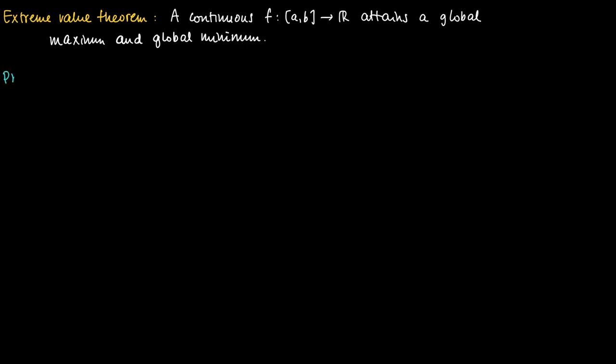In this clip I will provide a proof of the extreme value theorem. The extreme value theorem says that a continuous function on a closed interval attains a global maximum and a global minimum. As a first step, the claim is that a continuous function on a closed interval should be bounded.